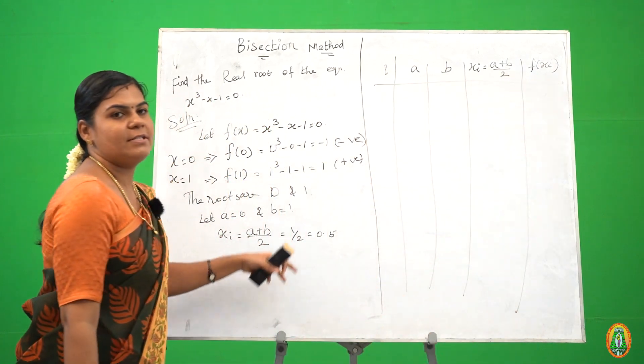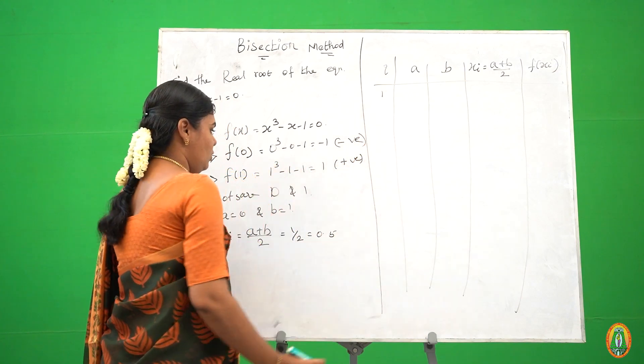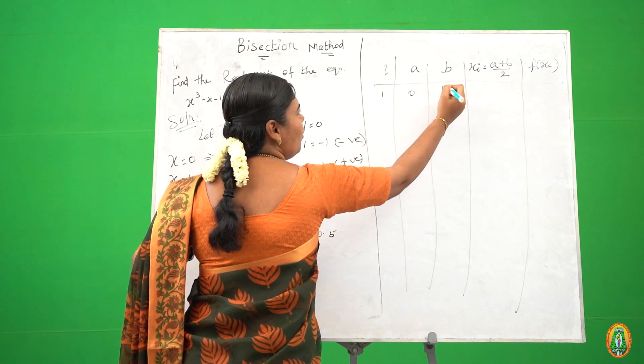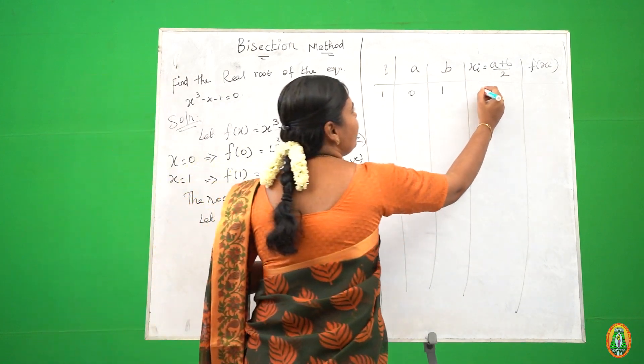So a value is 0 and b value is 1. So xi value is 0.5.